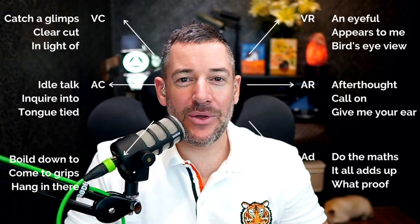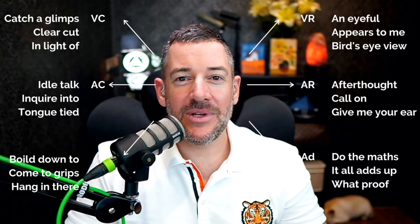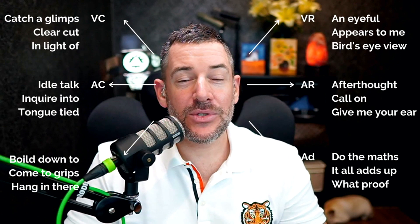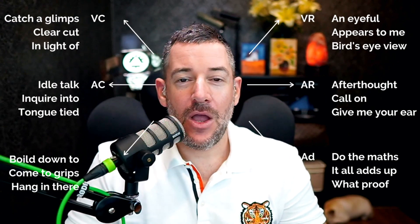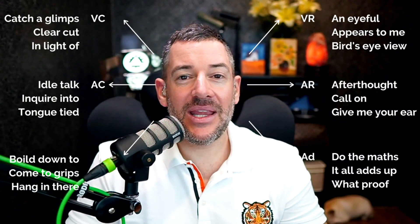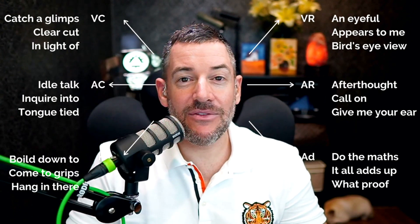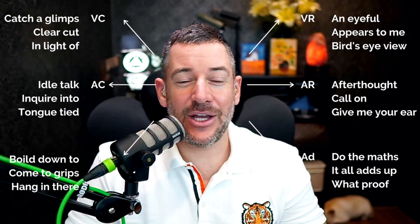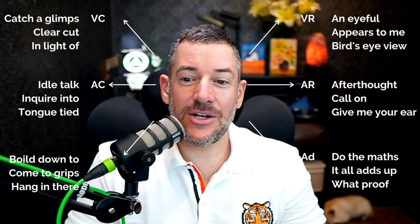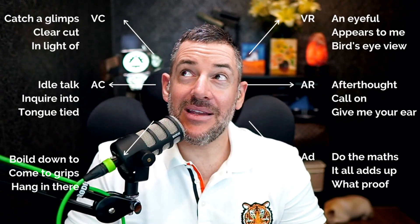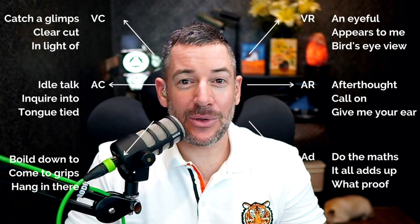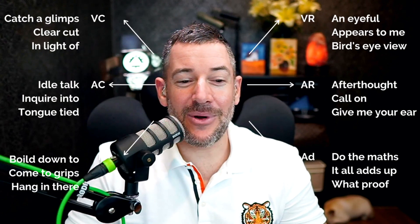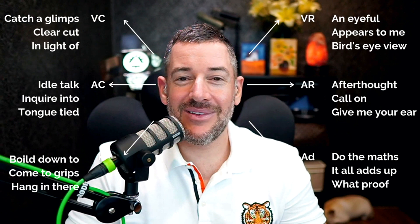Let's review what we've learned today. Your job is to use your sensory acuity to monitor the eye-accessing cues — where is this person going to access information? Once you've seen the pattern, you can say things like: 'Daniel, in light of our conversation today, I'd like to talk about the next steps.' Or, 'Daniel, it appears to me you're picturing what this might look like.' Or, 'Daniel, can I call on you for a testimonial later on?' Or, 'Daniel, no more idle talk — let's get down to business.'